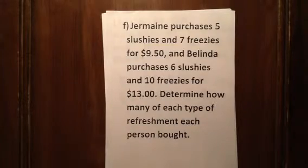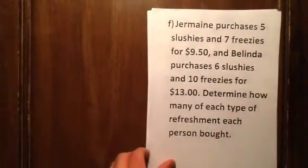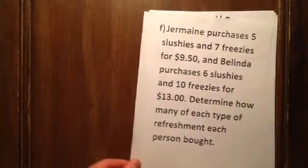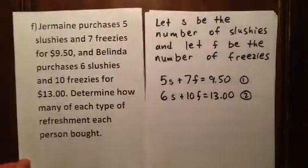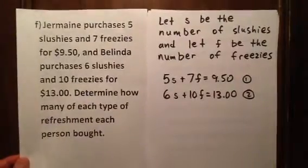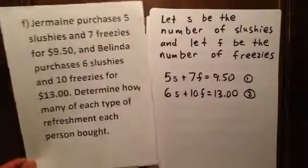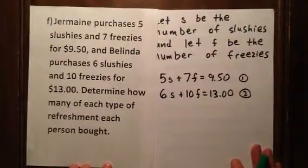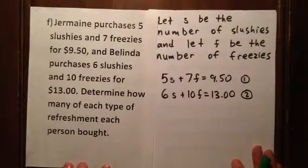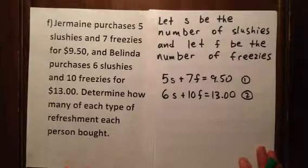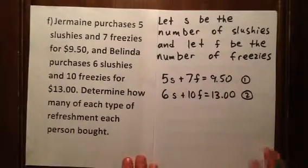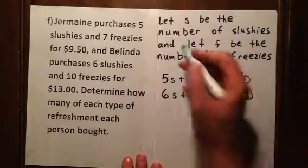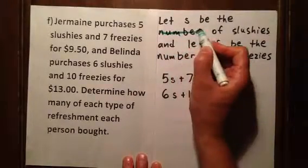Jermaine purchases five slushies and seven freezies for $9.50, and Belinda purchases six slushies and ten freezies for $13. We want to find the price of each item. We let S be the price of a slushie and F be the price of a freezie — noting that these represent prices, not quantities.